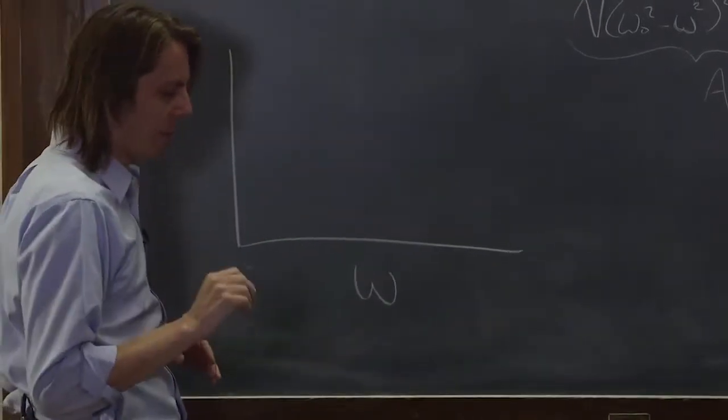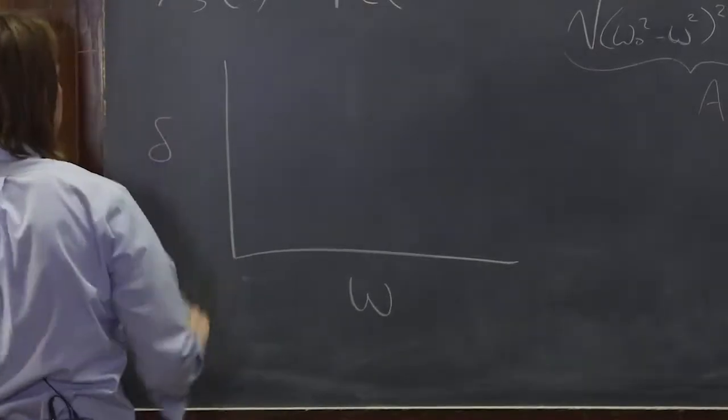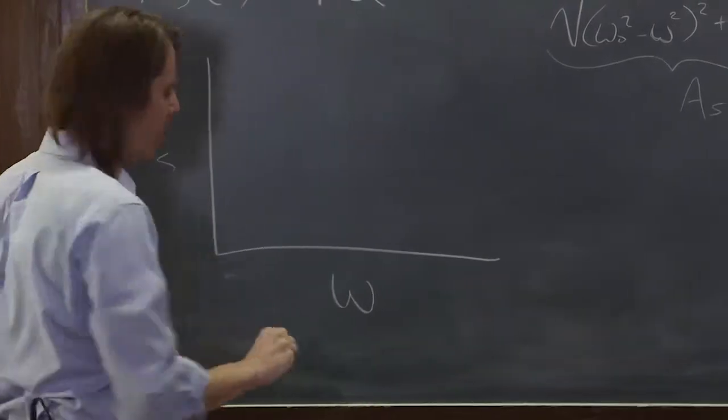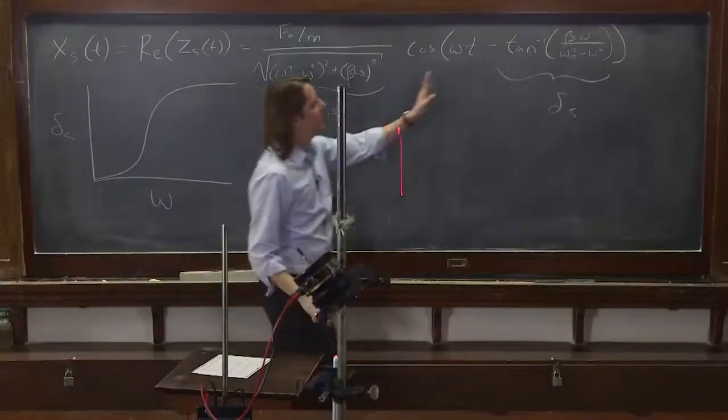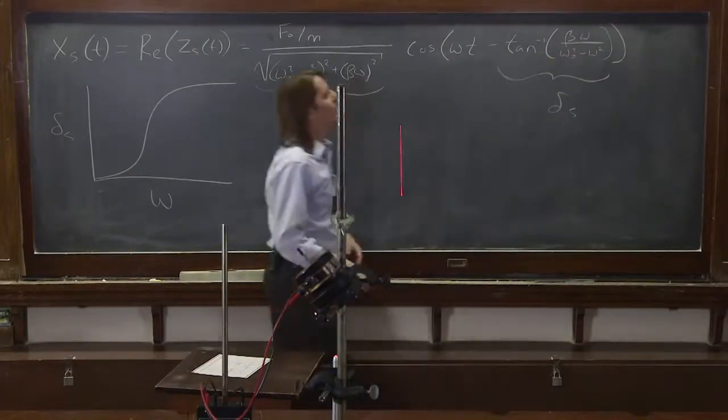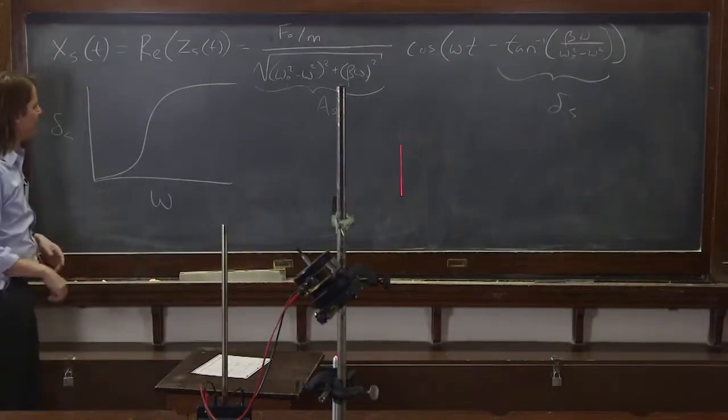As a function of drive frequency, if we were to plot delta S, it kind of goes like that. Inverse tangent of something with the omegas, both in the numerator and the denominator. It looks like this.